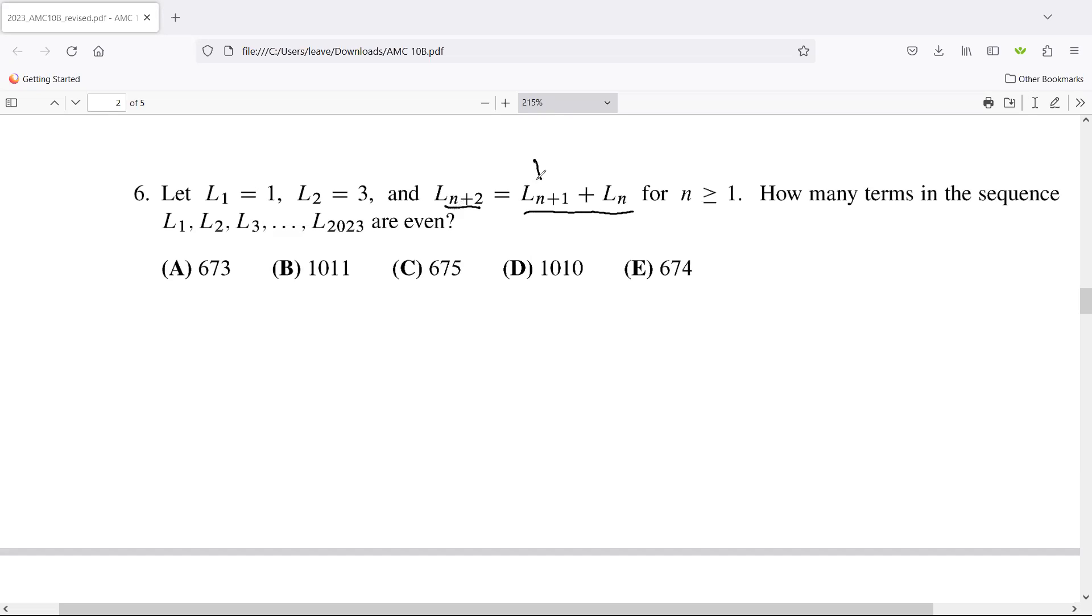So this is the next term, that's the previous term to that one, and this is the previous term to that one. We want the sum of the two previous terms: one, three, then four, then seven, then 11, then 18, then 29, and so on. How many terms in the sequence are even?